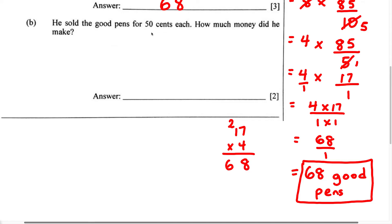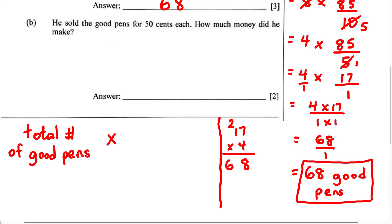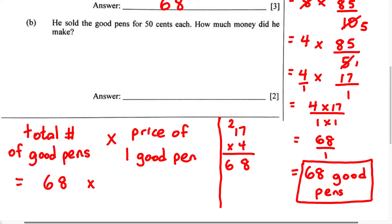Let's set this problem up. Total number of good pens multiplied by the price of one good pen. We know the total number of good pens is 68. The price of one good pen is 50 cents, since the question says he sold each good pen for 50 cents each. So we write 68 multiplied by 50 cents.